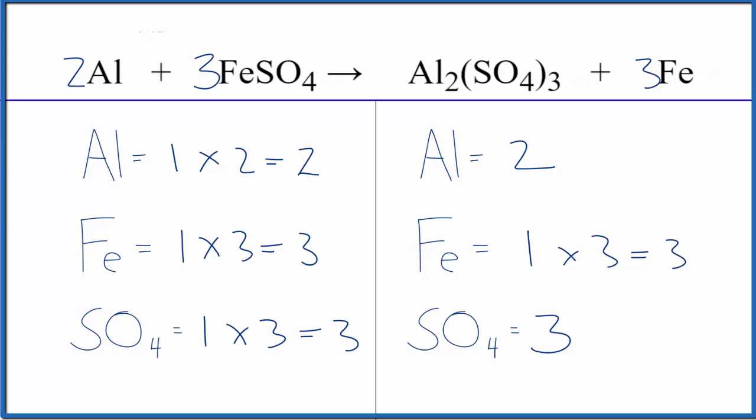they would look like this. This is Dr. B with the balanced equation and type of reaction for Al plus FeSO4, aluminum plus iron two sulfate. Thanks for watching.